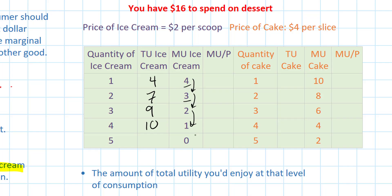Of course the fifth scoop adds zero marginal utility — I've had plenty of ice cream at this point, so I get a total utility of ten at both four and five scoops. I can do the same thing for my cake column.